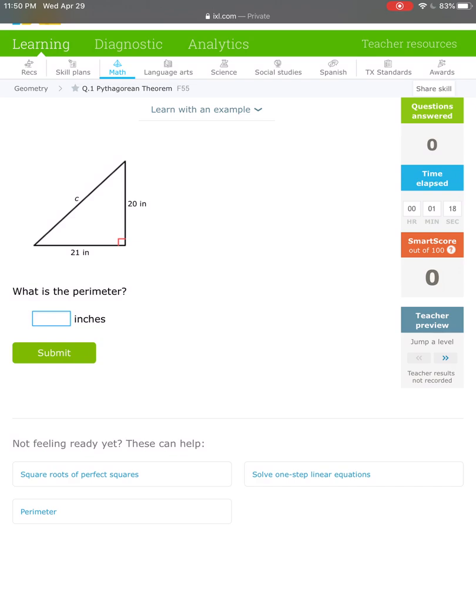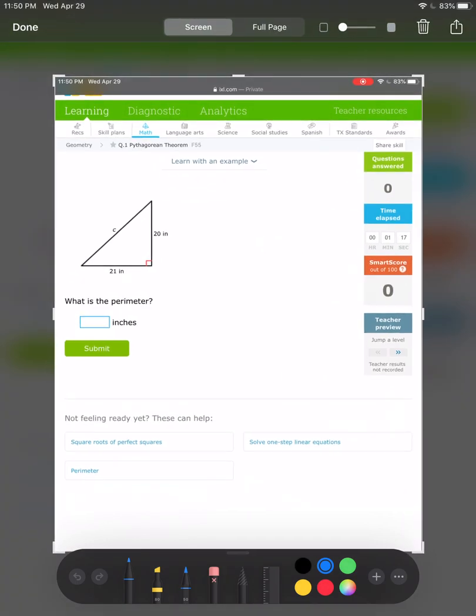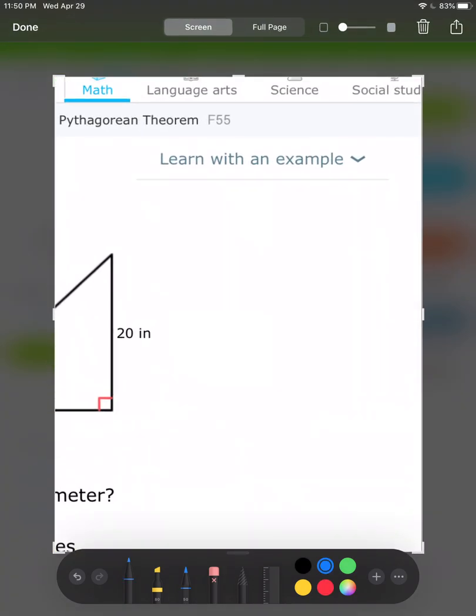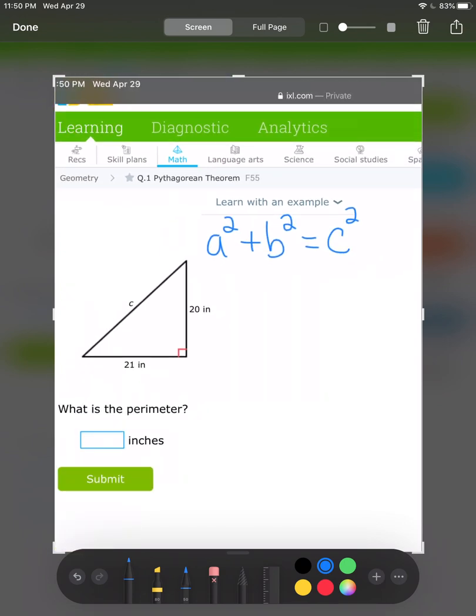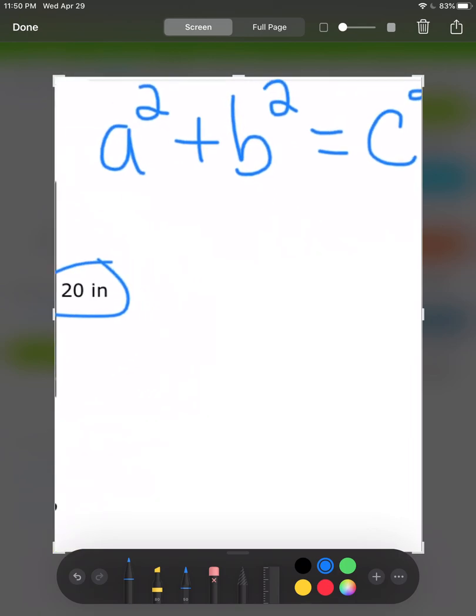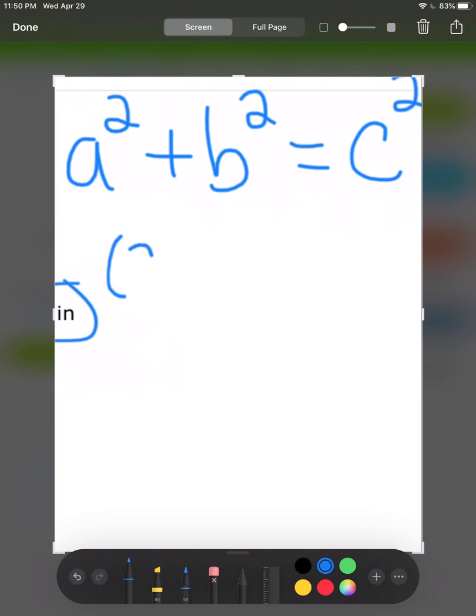To begin, we want to find the perimeter of this triangle. We need to remember that the Pythagorean Theorem is A squared plus B squared equals C squared. C is always your hypotenuse, which is the largest side. A and B are these two numbers. So I have 20 squared plus 21 squared equals C squared.